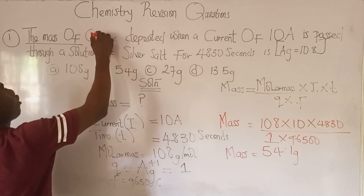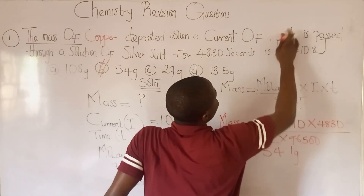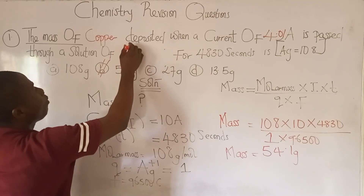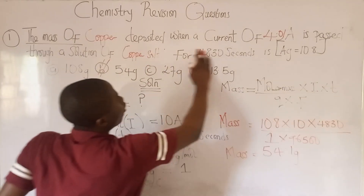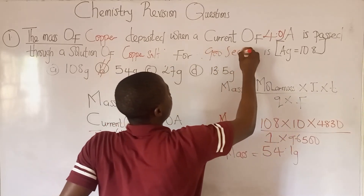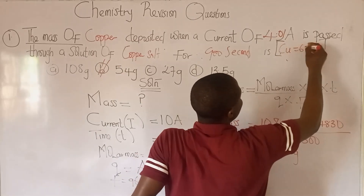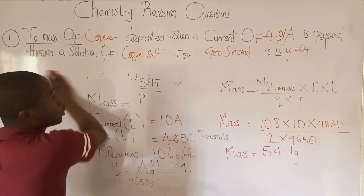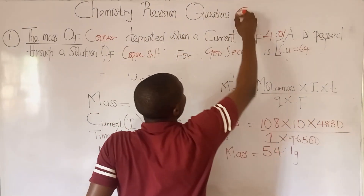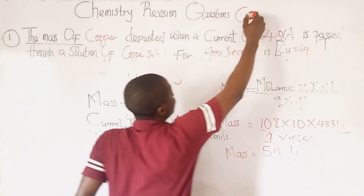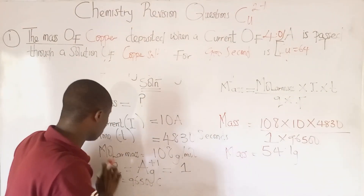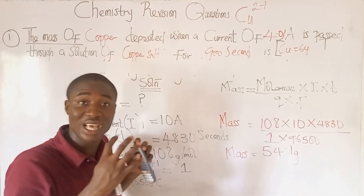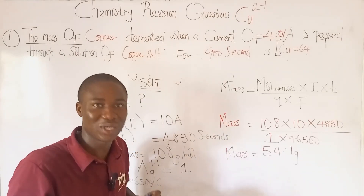Now here is your practice question: calculate the mass of copper deposited when a current of 4.01 amperes is passed through a solution of copper salts for 900 seconds. The atomic mass of copper is 64. Note that copper has a charge of Cu²⁺, so you already know how to get your q value. Provide your answers in the comment section below. If you find this video helpful, click subscribe and share these lessons with your friends.